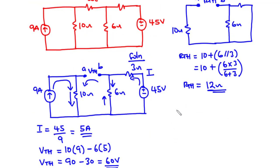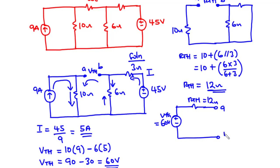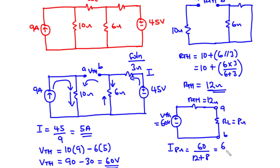Now let's draw the Thevenin's equivalent circuit. We have Vth to be 60 volts, Rth to be 12 ohms, and the load resistor Rl to be 8 ohms. To find the current flowing through the 8 ohms resistor, that is Vth divided by (Rth plus Rl), which is 60 divided by 20, equal to 3 amperes. Therefore the current flowing through the 8 ohms resistor is 3 amperes. That's it for today's video. Thanks for watching and see you in my next video.